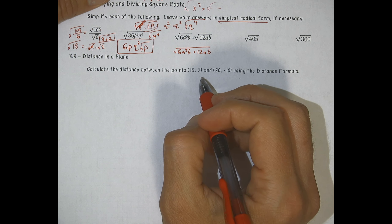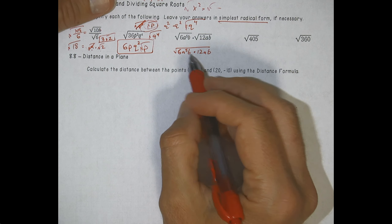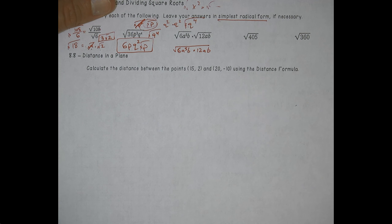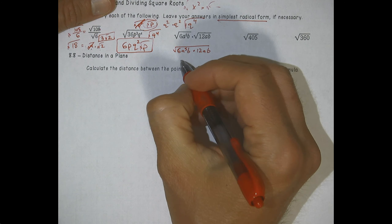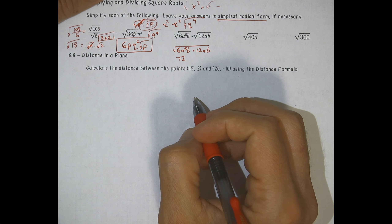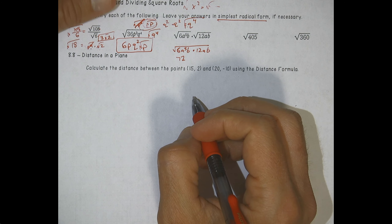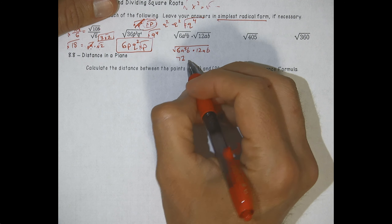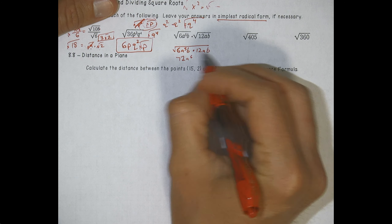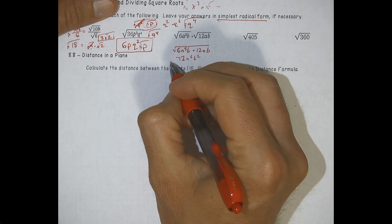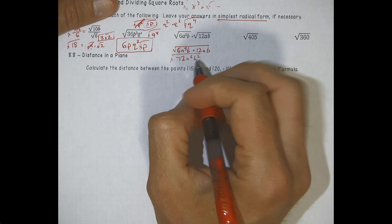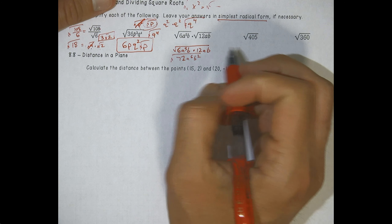We know 9 goes into both 27 and 18, so dividing by 9 gives 3 over 2. You'll notice on the answer key it wrote 3 over 1 — that's just a mistake on the answer key for this problem. If you do 3 divided by 2, you get 1.5, or 27 divided by 18 also gives 1.5. So you can put 1.5 out in front.